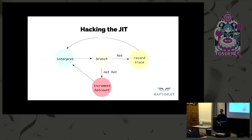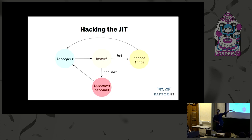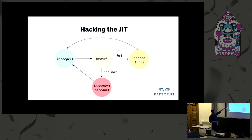In case you don't know how a tracing just-in-time compiler works, here's a super reduced explanation. A tracing JIT interprets code. When it hits a branch, it checks if it's hot or not. If it's not hot, it increments a hot count for that branch and continues interpretation. However, when the branch is hot, it starts recording a trace. Eventually, instead of hitting hot branches, you start executing compiled traces of hot code.